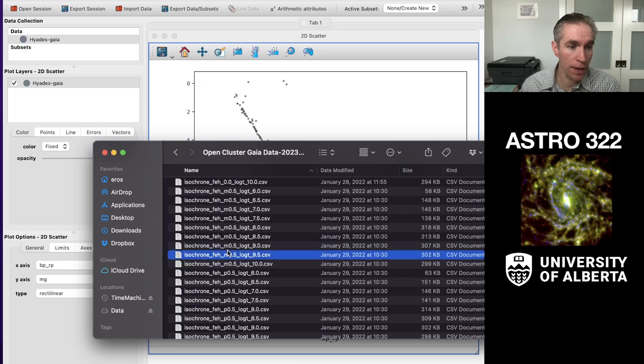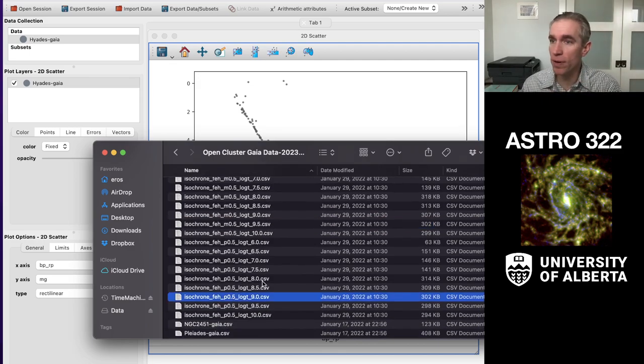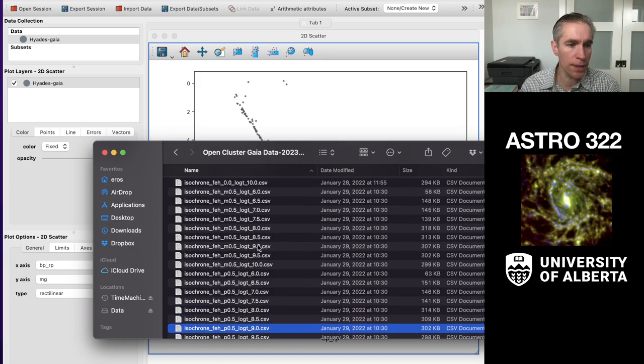Down here, I could have Fe on H M 0.5. That would be half a dex or half an order of magnitude below solar. So something that's a third solar in abundance of iron. And then the P 0.5 is plus 0.5 dex. And so this is plus 0.5 dex in metallicity and a 10 to the 9 or 1 giga year population.